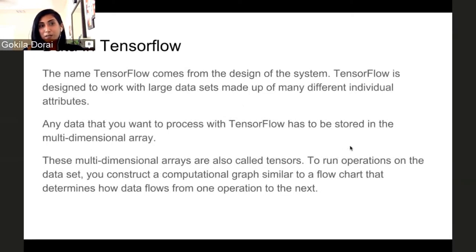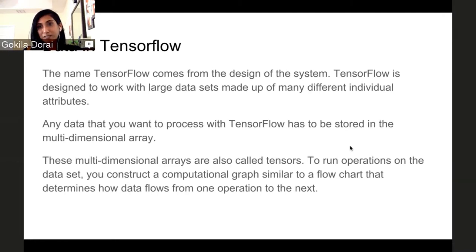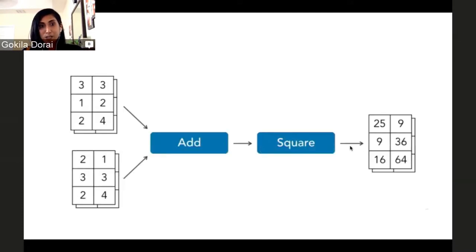The name TensorFlow comes from the design of the system. TensorFlow is designed to work with very large datasets made up of many different individual attributes. Any data that you want to process with TensorFlow has to be stored in a multidimensional array — these multidimensional arrays are also called tensors, and there comes the name TensorFlow. To run operations on the dataset, you construct a computational graph, which is similar to a flowchart that determines how data flows from one operation to the next.